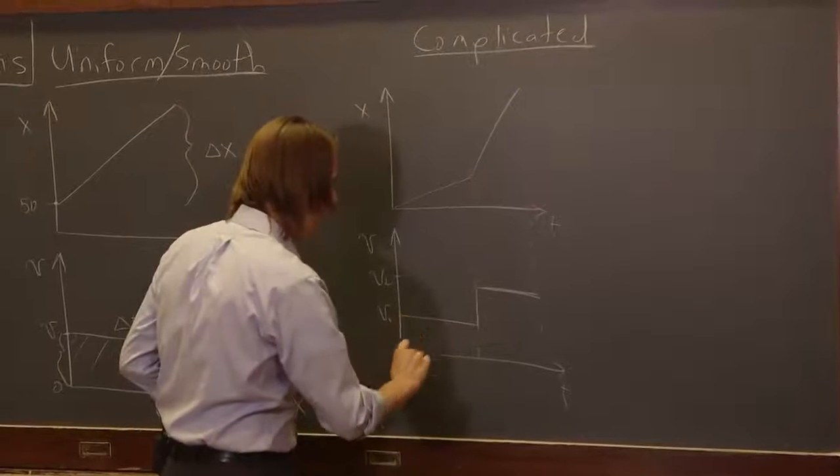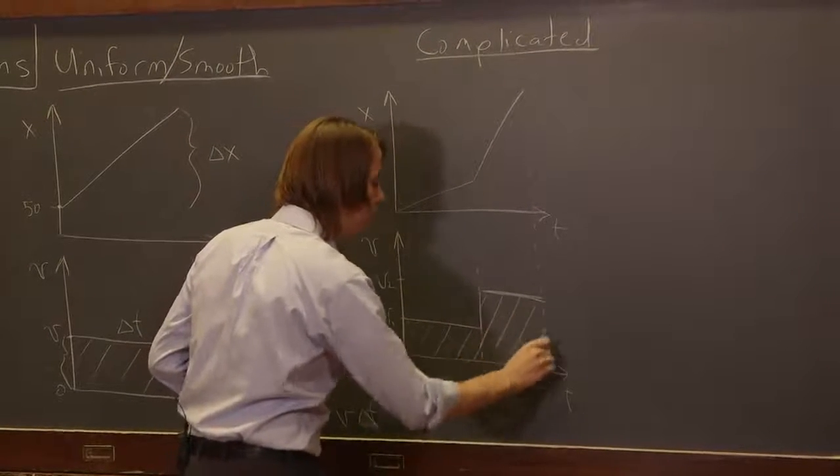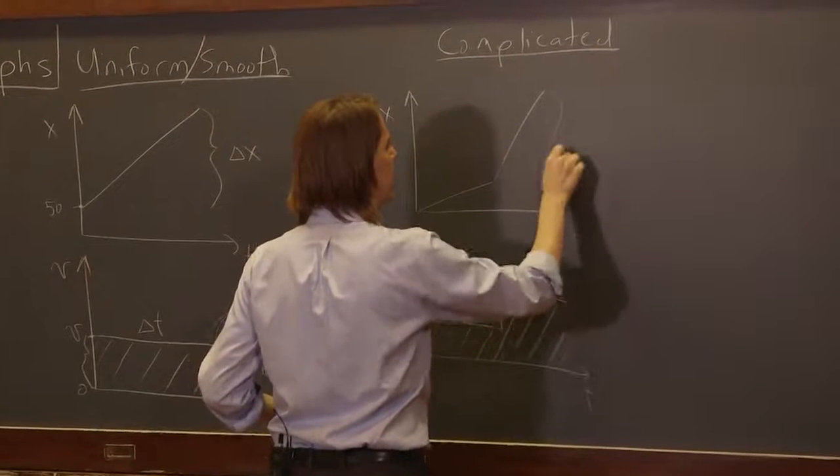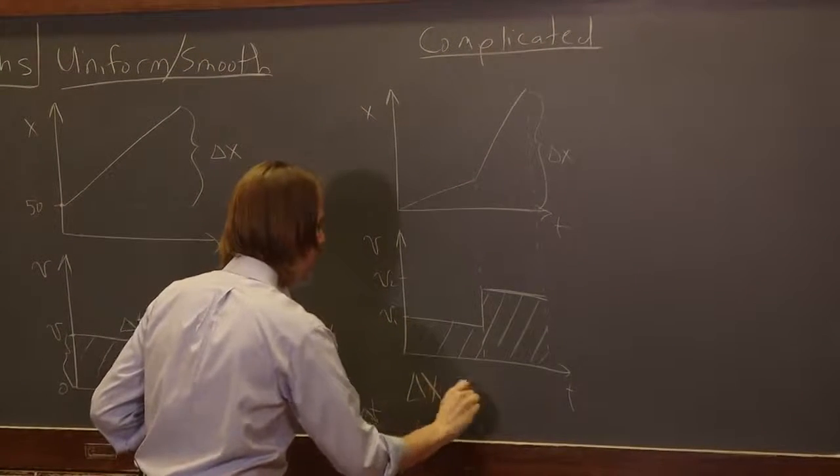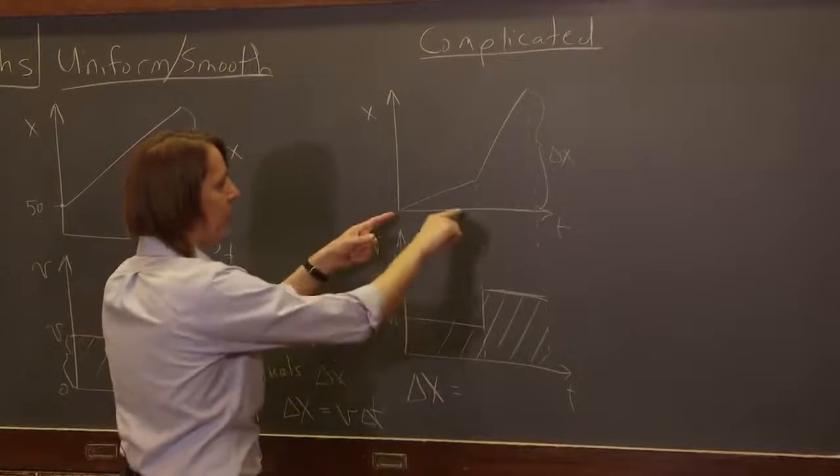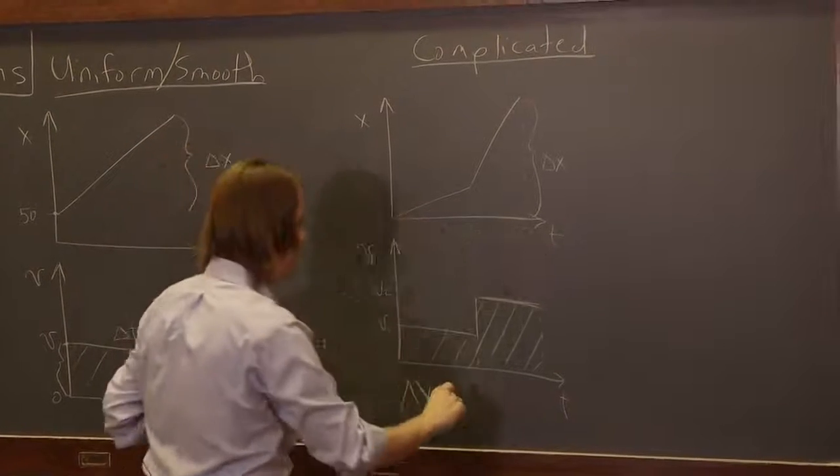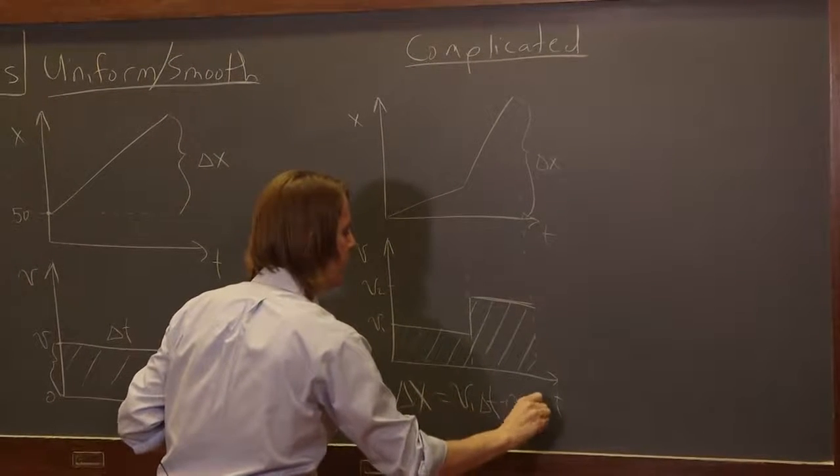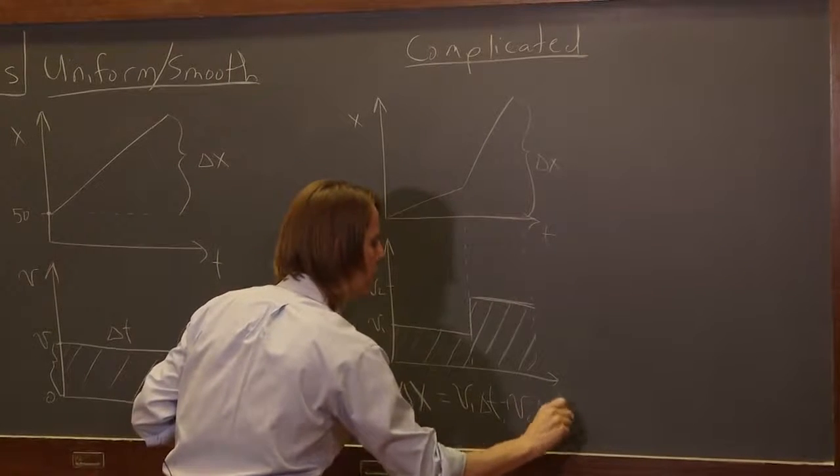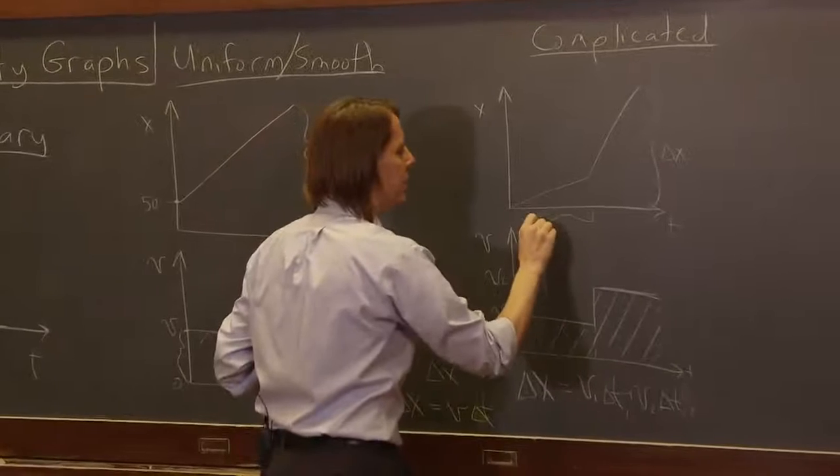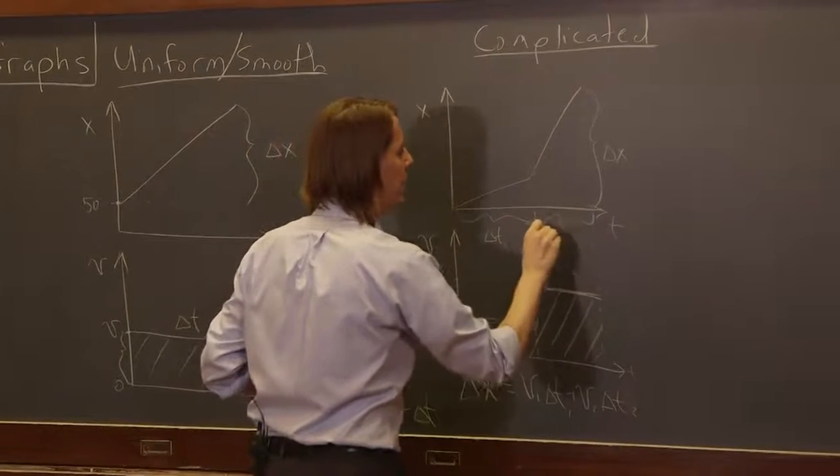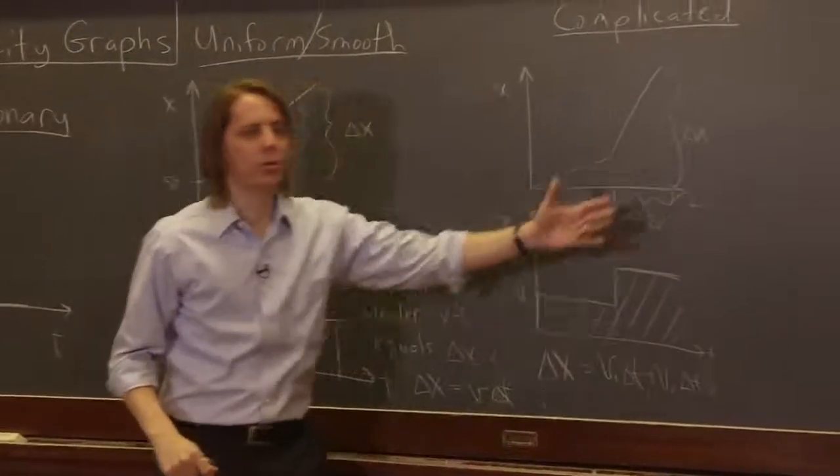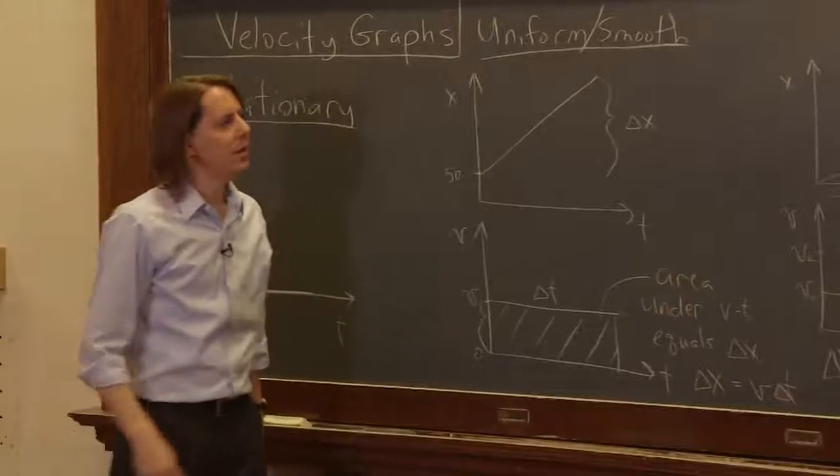And it's still true that delta x of this entire trip—if you want delta x of the entire trip, it would be this area under this curve. You could get it geometrically. You could say delta x, and by delta x I mean the total delta x, is v1 times—oh, now we have two delta t's. Now we've got to use our delta t notation. V1 times delta t1 plus v2 times delta t2, right? Where this is delta t1 and this is delta t2.